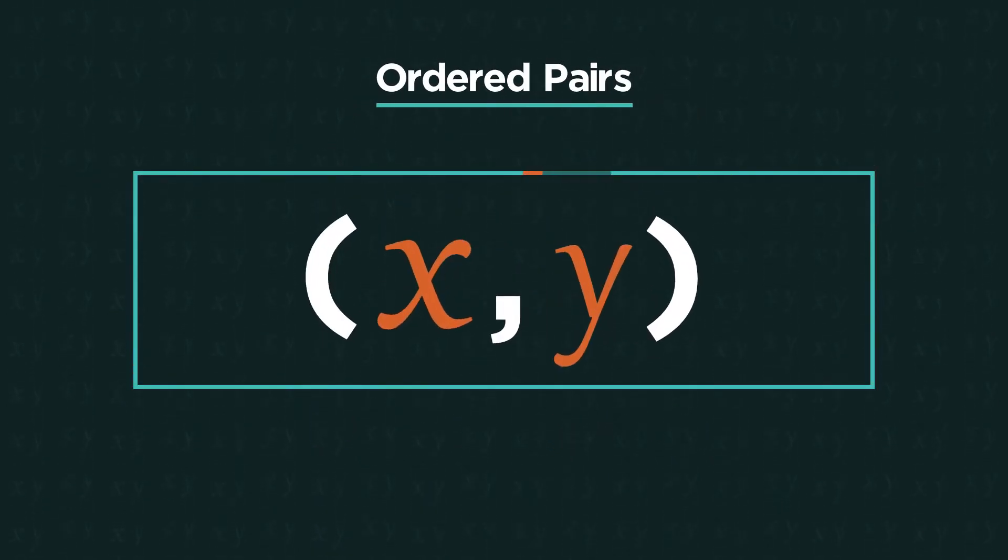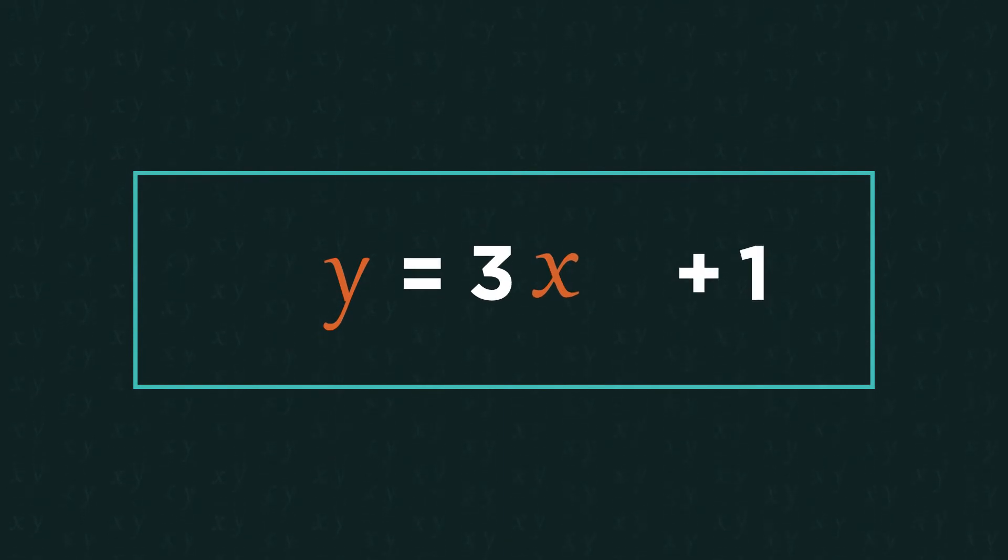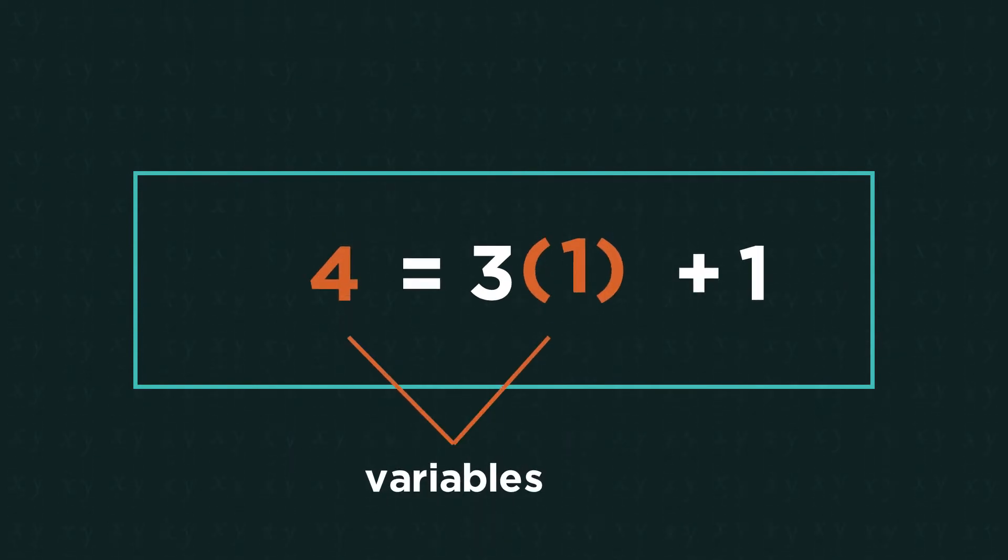Writing the pairs as x comma y is what makes it an ordered pair. The x and the y are both known as variables because they aren't set values. They vary.